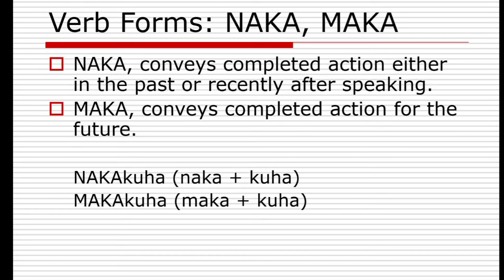'Naka' and 'maka' are another pair of verb forms. 'Naka' conveys a completed action, either in the past or recently after speaking — for example, 'nakakuha'. 'Maka', on the other hand, conveys a completed action for the future — for example, 'makakuha'.